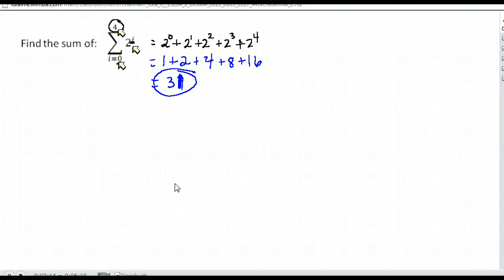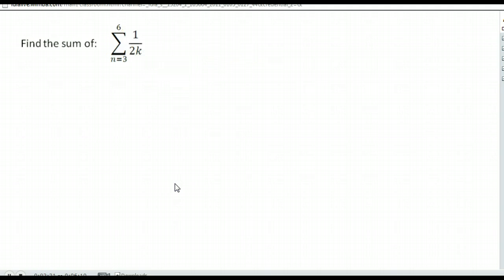Let's do another - I'm going to do three examples here. Here's our second example. We're supposed to start where k is three, and we're going to go from three to six. Here is our expression: it's one over two times whatever our k is. Again, we start with k being three, so our first term would be one over two times three.